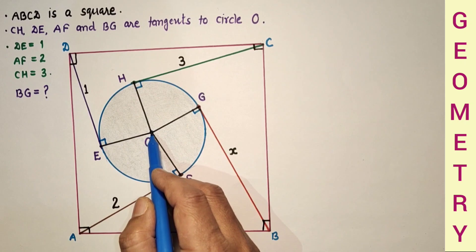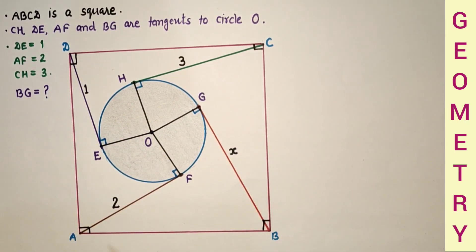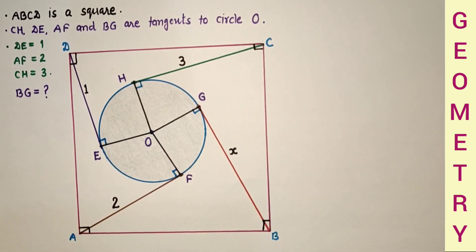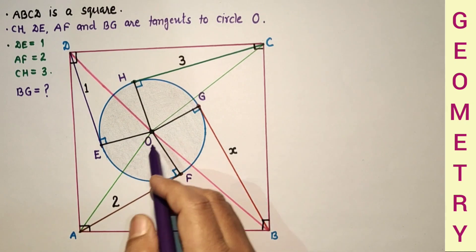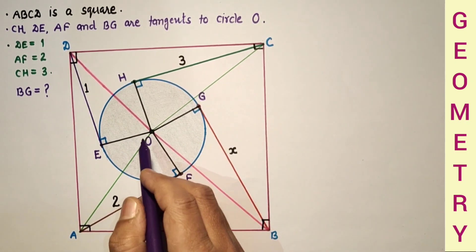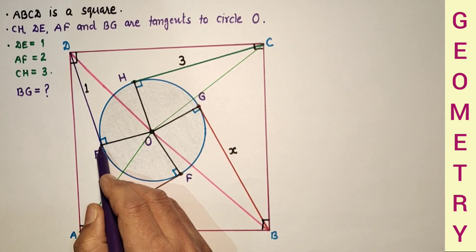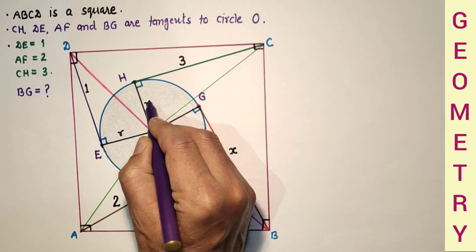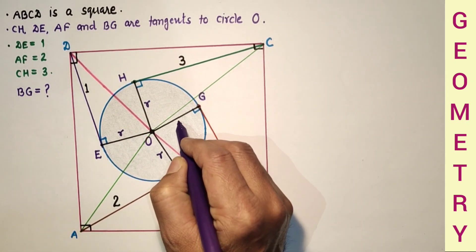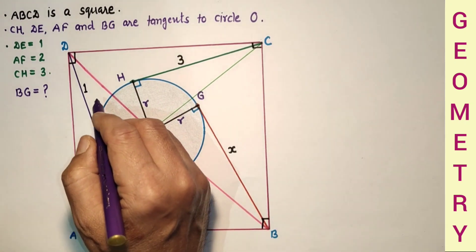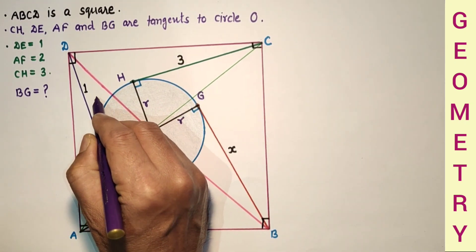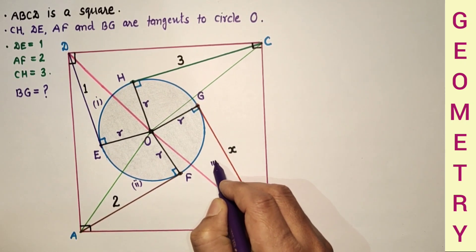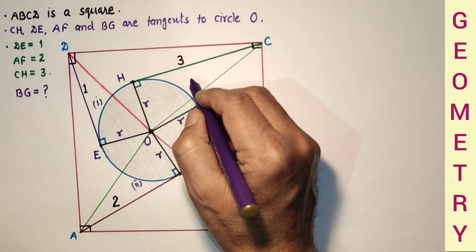Now join the center of the circle to the vertices of the square: OD, OA, OB and OC. Let the radius from the center to the circumference be R. Let us label the resulting right triangles: this triangle is first, this is second, this triangle is third, and this right triangle is fourth.